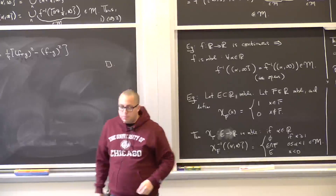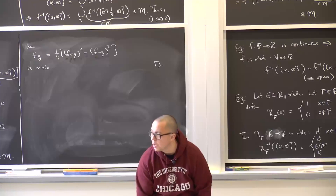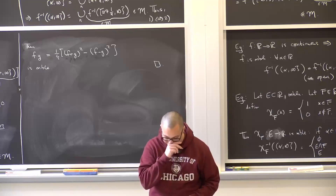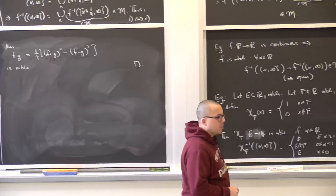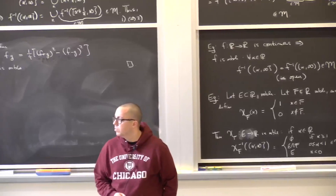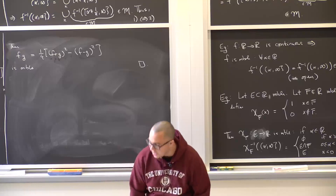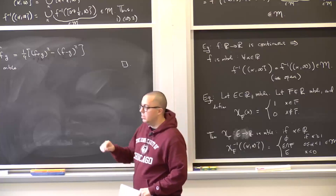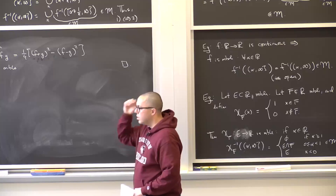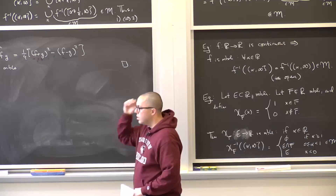What really sets apart measurable functions — and eventually Lebesgue integrable functions — from Riemann integrable functions is that measurable functions are closed under taking pointwise limits, whereas Riemann integrable functions are not. The following theorem makes this precise.